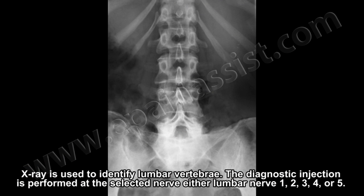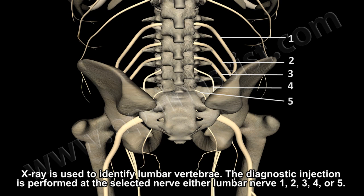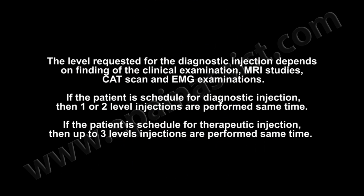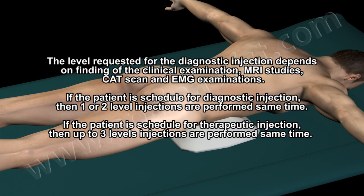The diagnostic injection is performed at the selected nerve — either lumbar nerve 1, 2, 3, 4, or 5. The level requested for the diagnostic injection depends on findings from clinical examination, MRI studies, CAT scan, and EMG examination. If the patient is scheduled for diagnostic injection, one or two levels are injected at the same time. If scheduled for therapeutic injection, up to three levels are injected at the same time.